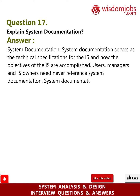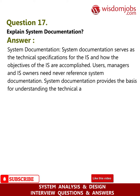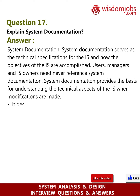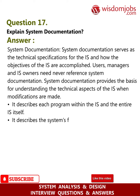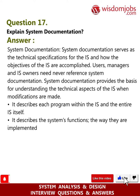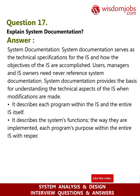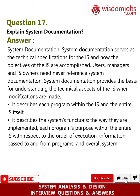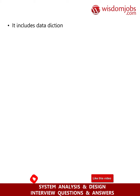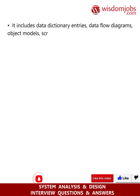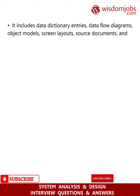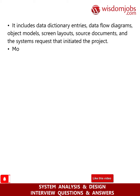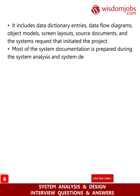Users, managers, and IS owners need never reference system documentation. System documentation provides the basis for understanding the technical aspects of the IS when modifications are made. It describes each program within the IS and the entire IS itself — its functions, how they are implemented, each program's purpose within the IS with respect to order of execution, information passed to and from programs, and overall system flow. It includes data dictionary entries, data flow diagrams, object models, screen layouts, source documents, and the system request that initiated the project.